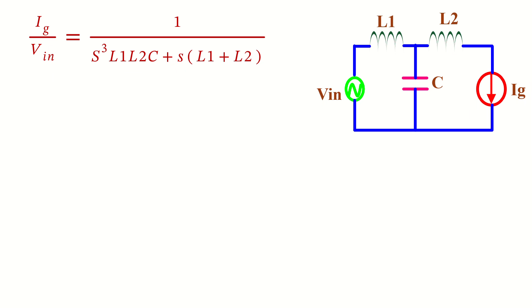Where s is the Laplace variable, L1 and L2 are inductances, and C is the capacitance. The resonant frequency is expressed as root of L1 plus L2 divided by L1 L2 C.